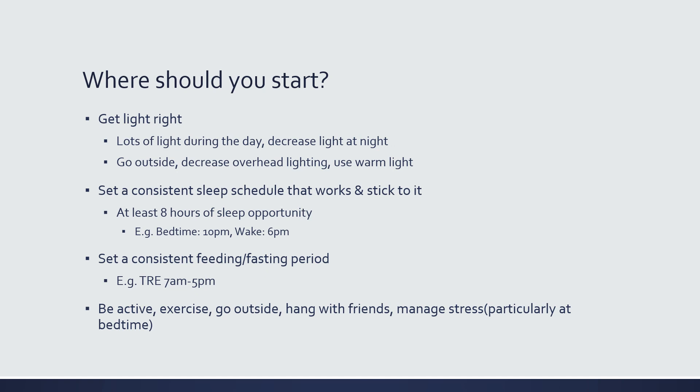So where should you start if you want to leverage the science of circadian rhythms to improve your health, resist chronic disease, fall asleep when you're supposed to, and help prevent things like type 2 diabetes? The basics are important. Get light right: get lots of light during the day and decrease light at night. Go outside throughout the day — not just in the morning and then stay inside. Get as much exposure to outdoor light as possible. Outdoor light is the most important zeitgeber. Indoor overhead lighting is not very effective at setting your circadian rhythm.